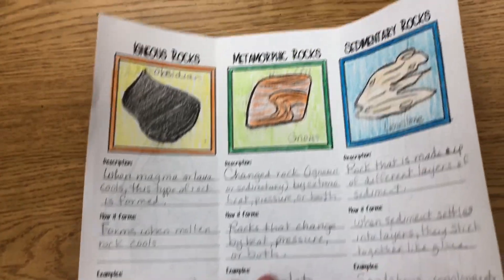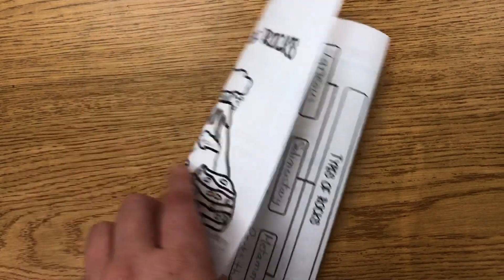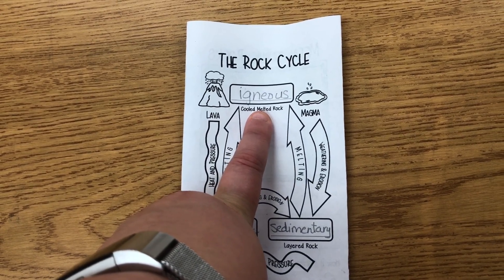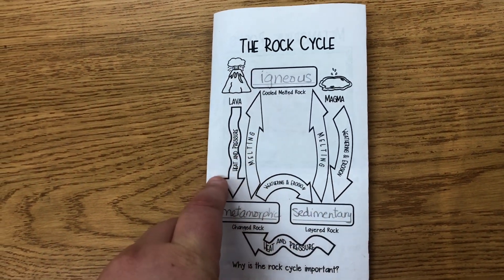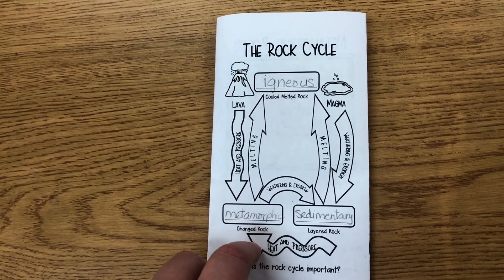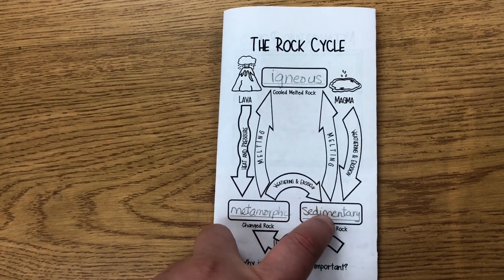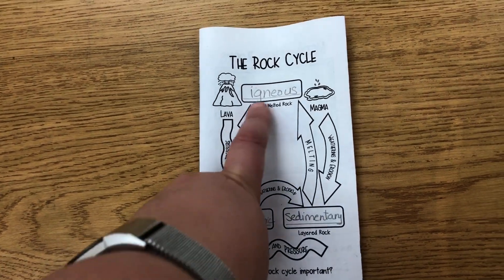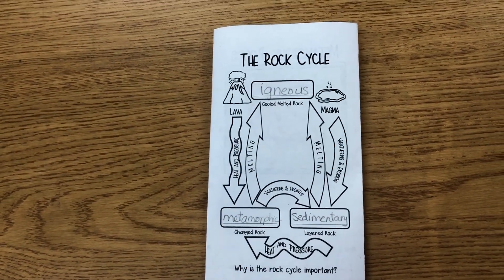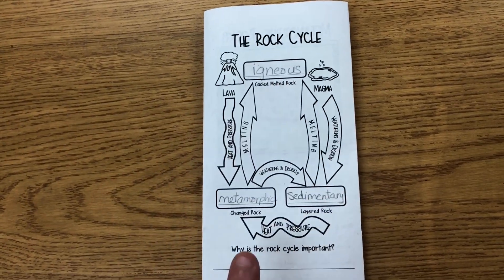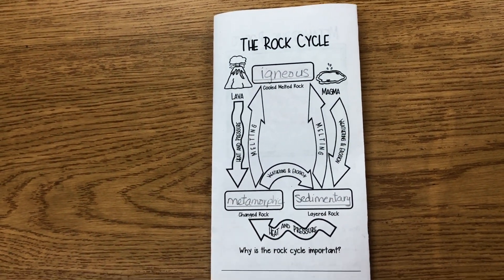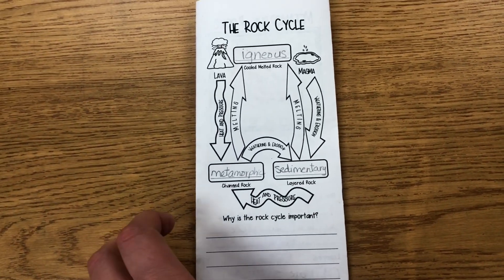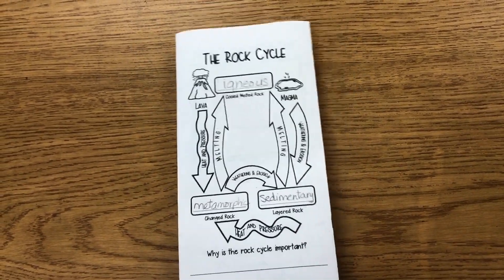They also had examples of each kind of rock. On the back of the trifold, they had the actual rock cycle showing what happens: cooled melted rock becomes igneous; with heat and pressure it becomes metamorphic; and with weathering and erosion it becomes sedimentary. We can go through heat and pressure again to get metamorphic, and if we melt it, we're back to igneous. This shows them the whole rock cycle — it doesn't just go one way. They also have to answer the question: why is the rock cycle important?